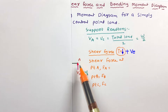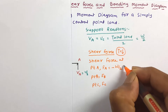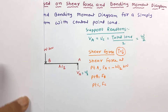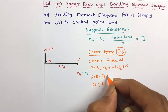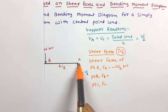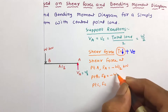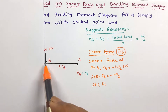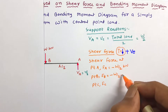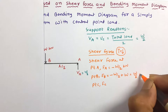At point A, Va is acting in the upward direction, so it will be negative, giving shear force of minus W/2. At point B, point load W is acting in the downward direction, so it will be positive, giving a shear force of plus W/2 kN.